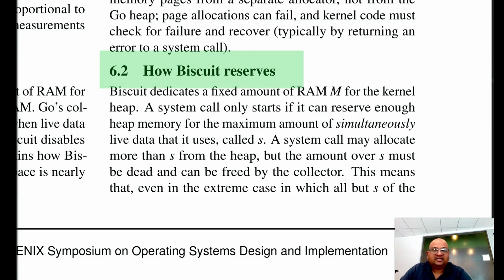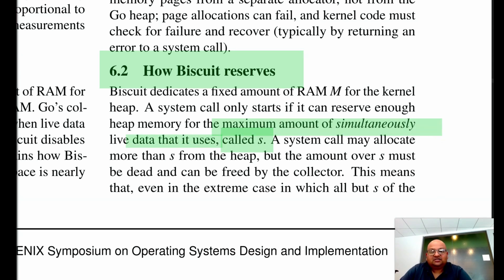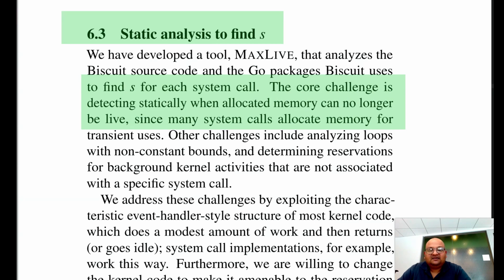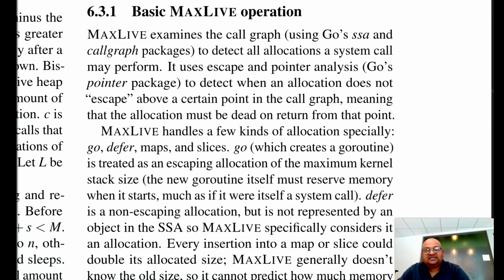How does Biscuit reserve enough RAM for a system call to succeed upfront? Let's denote by s the amount of simultaneously live data that a system call uses. The approach Biscuit takes is to perform a static analysis over the kernel source code to find out how much RAM a system call would need. This is non-trivial because it is hard to find out statically when allocated memory is no longer live due to transient users, and when dealing with loops, it's hard to statically know the bounds. So Biscuit examines the call graph to detect all locations where a system call may allocate memory. Go provides several convenient packages that give you access to static representations of your source code to make this static analysis easier.